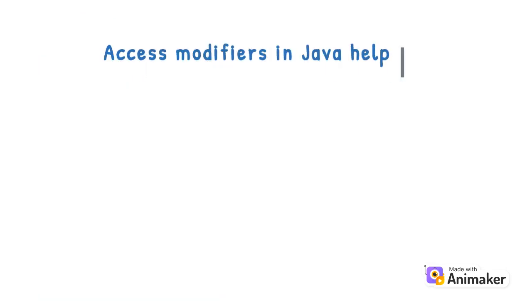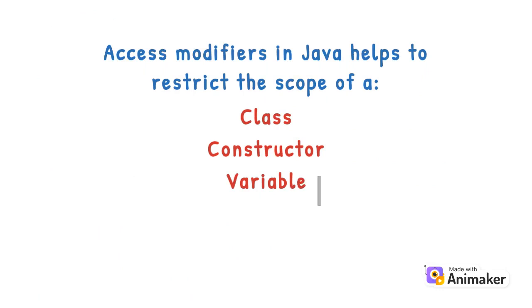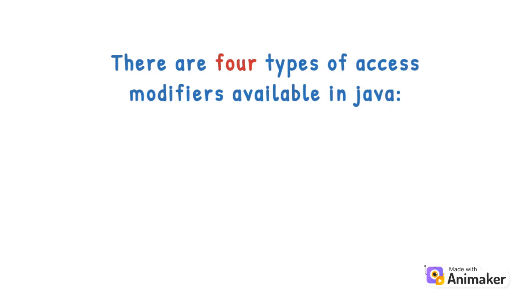Access modifiers in Java help to restrict the scope of a class, constructor, variable, method, or data member. There are four types of access modifiers available in Java.